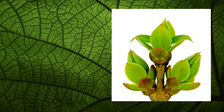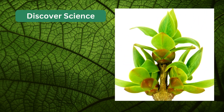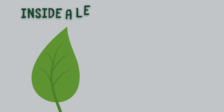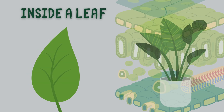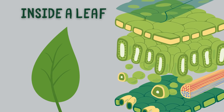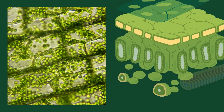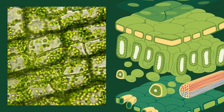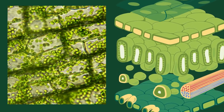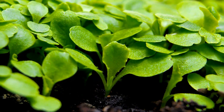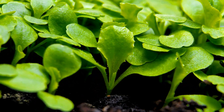Hi kids! Today let us discover science. Do you know what's inside a leaf? A leaf is a crucial organ in plants. Its structure can be divided into several key parts, each with a specific function. Come, let's see these parts work together to optimize the leaf's ability to ensure the plant's growth and survival.